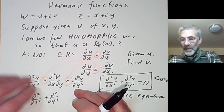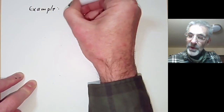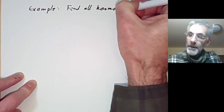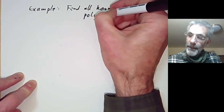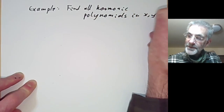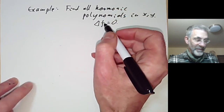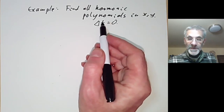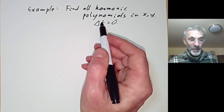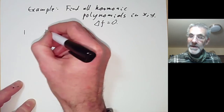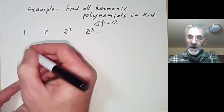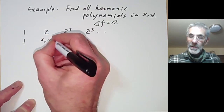We can use this to find solutions of Laplace's equation by taking any holomorphic function and taking its real or imaginary part. For example, let's find all harmonic polynomial functions in x and y — we want to solve Δf = 0 where f is a polynomial. We can write down lots of solutions by taking complex polynomials of z, which are holomorphic, and taking their real and imaginary parts. Taking 1, z, z², z³, and so on: from 1 we get 1, from z we get x and y — all harmonic.